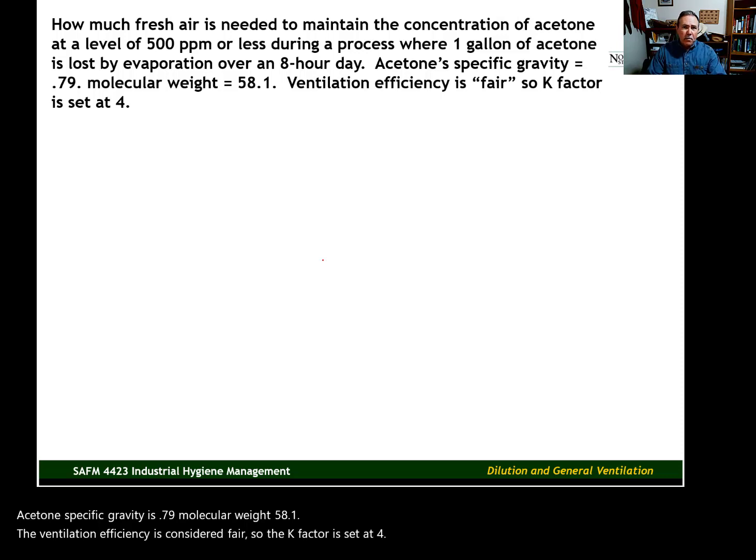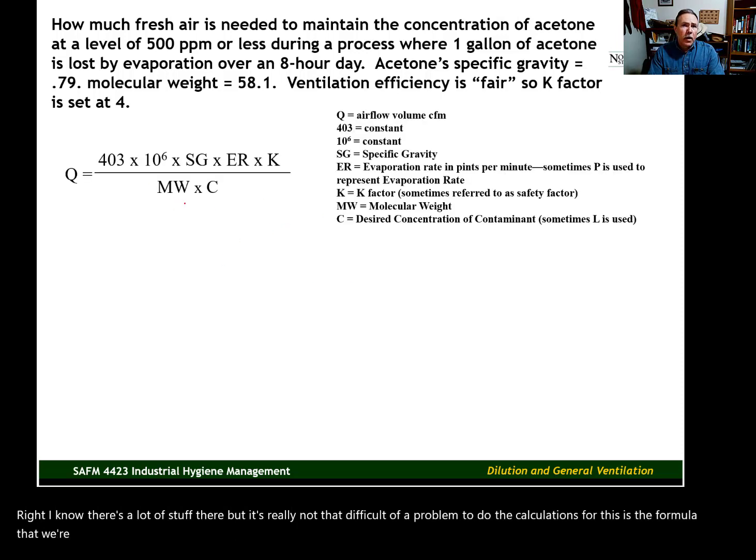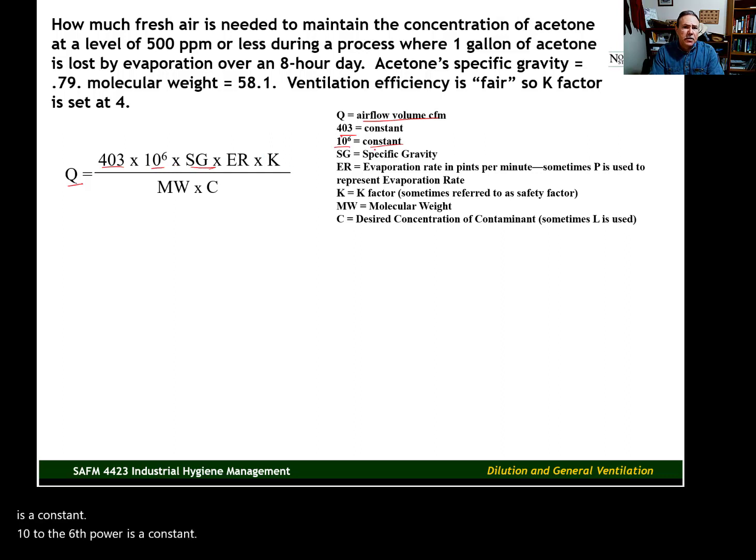I know there's a lot of stuff there, but it's really not that difficult of a problem to do the calculations for. This is the formula that we're going to use. Let me go ahead and work through all the different components of the formula. Q is the airflow rate or volume that we're calculating, and it's the volume in cubic feet per minute. 403 is a constant. 10 to the sixth power is a constant. SG is specific gravity. ER is the evaporation rate in pints per minute.